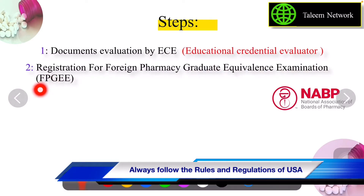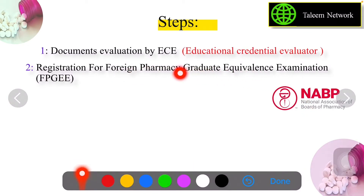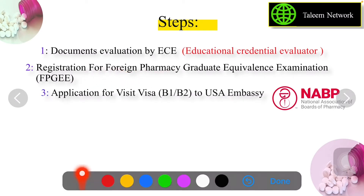The second step is to apply for registration for your FPGE exam. You apply on the NABP website, and NABP will evaluate your application. If you are eligible, NABP will send you a roll number slip or FIC — the FPGE Identification Card. On the basis of this card you can apply for a visa, because you have to travel to the US to take this exam.